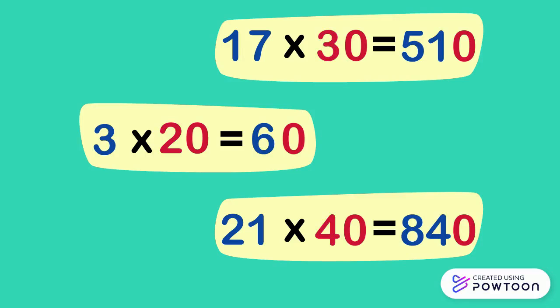In other words, to multiply a number by 20, 30 or 40, we multiply the number by 2, 3 or 4, then we put a 0 to the right side of the number, which means we put the 0 in the ones place column.